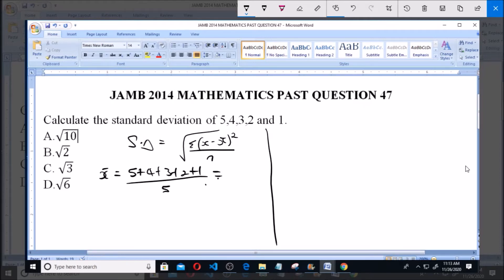Now this is equal to 15 all over 5, which is equal to 3. Now we have gotten the mean so we can definitely find the standard deviation since we have the mean.